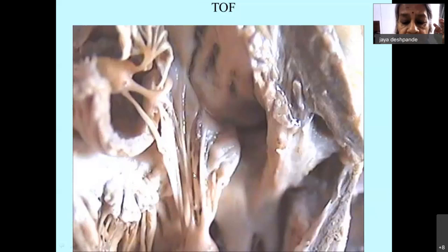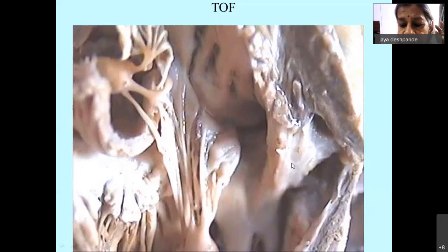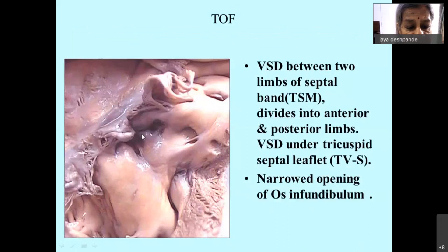Here is a closer look: the deviated outlet septum anteriorly and cephalad, the narrowed right ventricular outflow, the os infundibulum, and the VSD. Here is the tricuspid valve — this muscle mass should have been sitting here producing proper alignment, but instead it has gone anteriorly and cephalad. Sometimes there is very severe hypertrophy of the right ventricular musculature, with markedly hypertrophied trabecular septum marginalis, the VSD, and the os infundibulum.